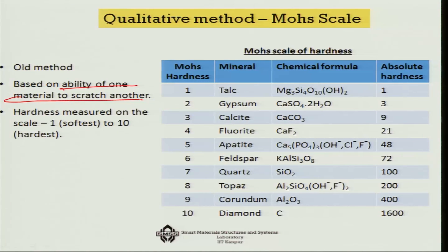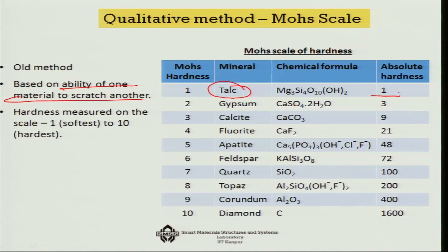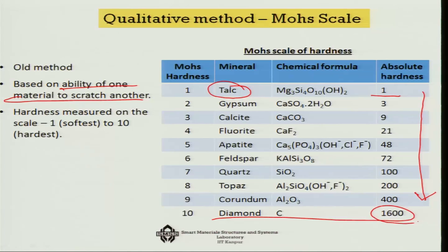In that scale, geologists considered talc to be the softest material with an absolute hardness of one. Various materials were then used to scratch on talc, and from the depth of indentations and the power of scratching, ranking was done. From that scale, going from very low to high hardness, diamond has the highest hardness at 1600.